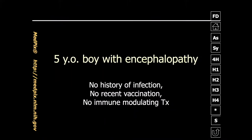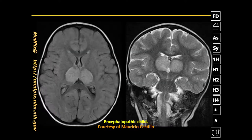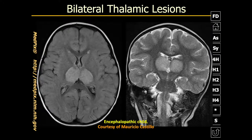Let's start out with a case: a five-year-old boy with encephalopathy, no history of infection, no recent vaccination, no immune modulated therapy. On the axial and coronal images we can see multiple bilateral lesions that are very symmetric and appear to be localized to the gray matter of the thalamus. So we have bilateral thalamic lesions in an encephalopathic child.